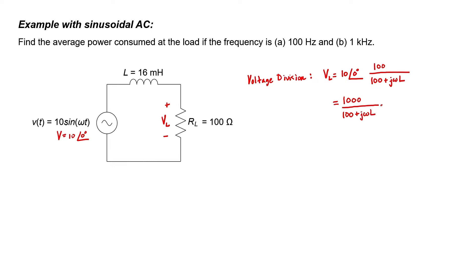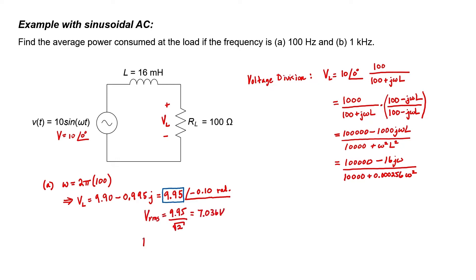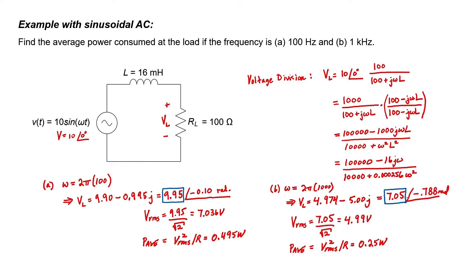Let's multiply the numerator and the denominator by the complex conjugate of the denominator in order to get the imaginary part into the numerator. The inductance L is given in the problem, so the phasor form of the load voltage is a function only of the frequency omega. In part A, the frequency is 100 hertz, so we have enough information to find the load voltage in both cartesian and polar form. The amplitude of the load voltage gives us the RMS voltage, which then gives us the average power. In part B, the frequency is 1 kilohertz. We can notice that the frequency doesn't matter when calculating power — that's why using RMS is so useful — but that only works with sine waves.